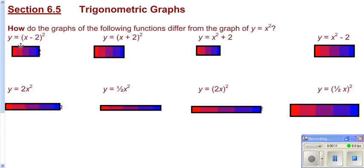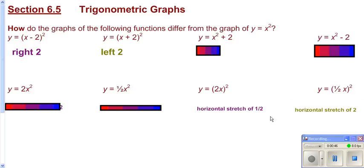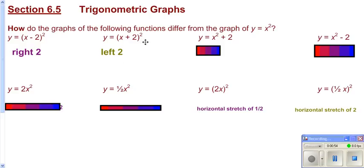Let's go ahead and review, first of all, what happens to our x squared graph if we subtract 2 from x before we do the squaring — it moves 2 units to the right. If you add 2 before squaring, it moves 2 units to the left. If we multiply by 2 before squaring, it gives a horizontal stretch of one half, makes it only half as wide. Multiplying by one half makes it twice as wide, a horizontal stretch of 2. Basically, when you do something to x before applying the function, it does the opposite of what you initially think.